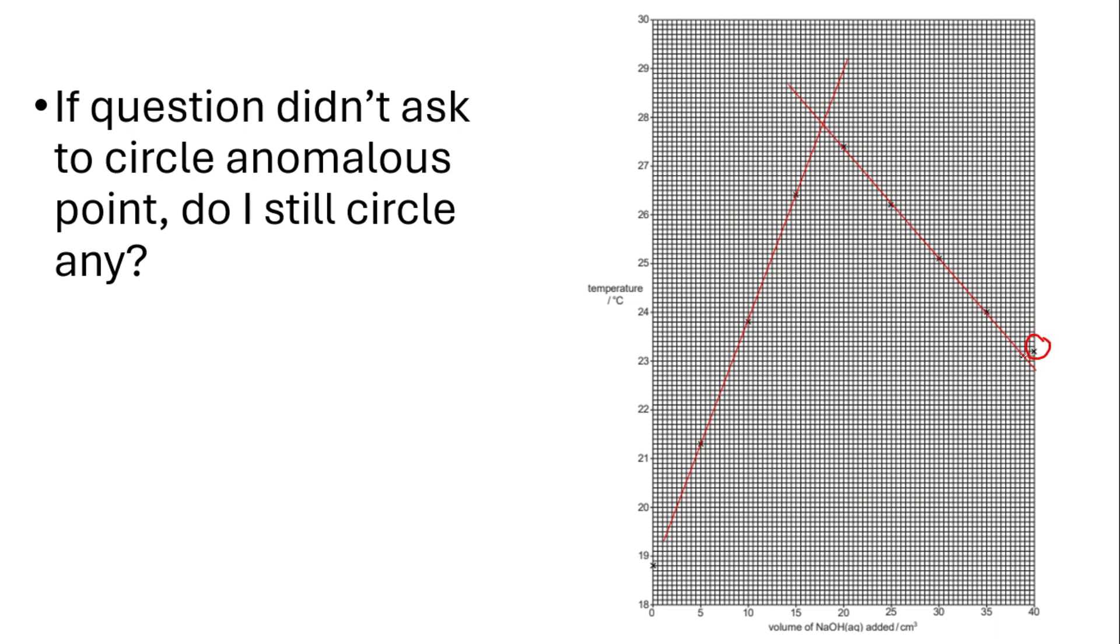There's an anomalous point that I didn't include when I drew my line of best fit. So, I need to circle this point and label it as anomaly or anomalous point. The reason for doing this is I'm telling the examiner that I'm excluding this point when I draw my line of best fit.